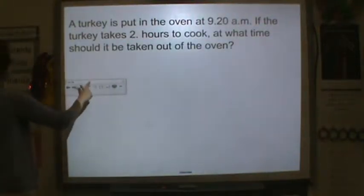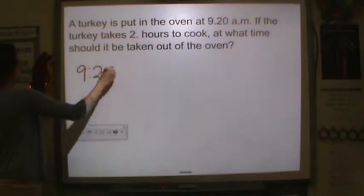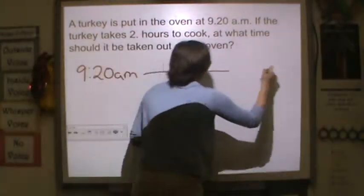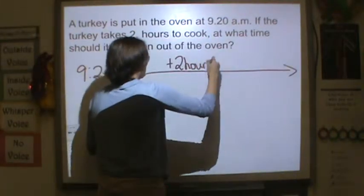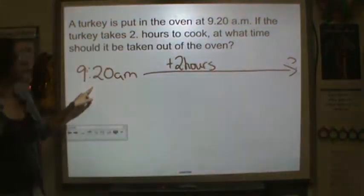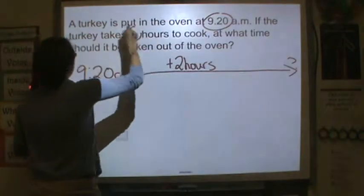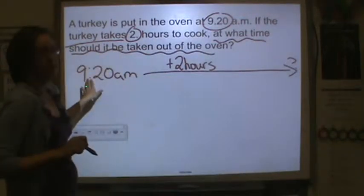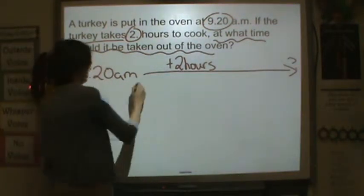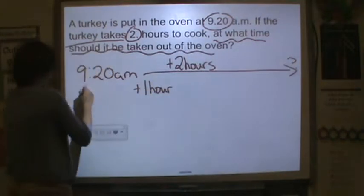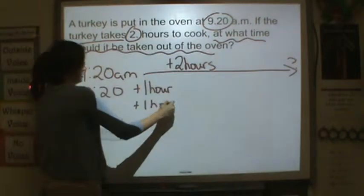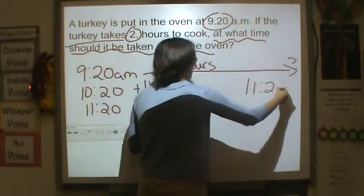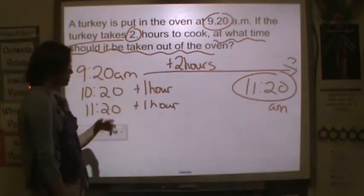A turkey was put in the oven at 9:20 a.m. If it takes 2 hours to cook, what time should it be taken out of the oven? So we're going to add 2 hours to our 9:20 because it says it takes 2 hours. So 9:20 — if I add 1 hour, I have 10:20. If I add another hour, I have 11:20. So 1, 2 hours — what time does it need to be taken out? 11:20. It will be 11:20 a.m. because we haven't passed noon yet.